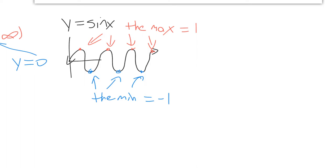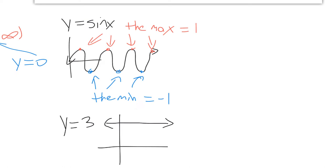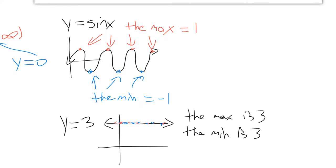Could the maximum and minimum ever be the same value? Consider the constant function y = 3. Every point along the line is simultaneously the maximum and the minimum — the max is 3 and the min is 3, and both happen everywhere all the time. Constant graphs are a little boring and we don't tend to study them, but as an interesting consequence of our definition, this graph is always both the maximum and minimum.